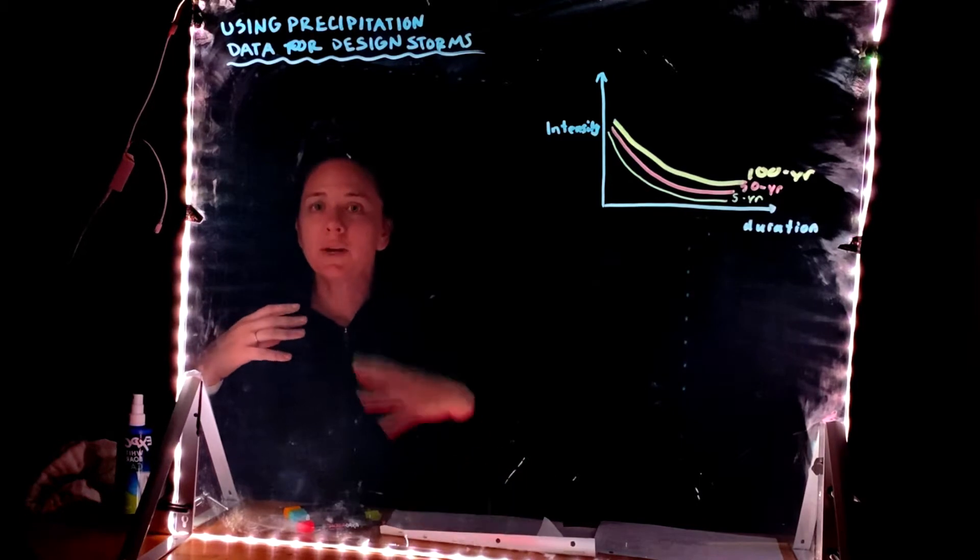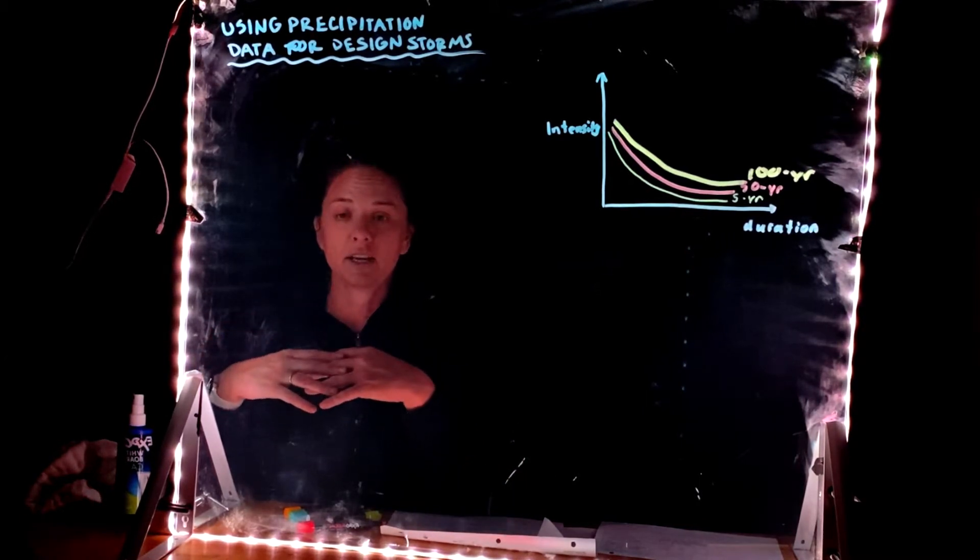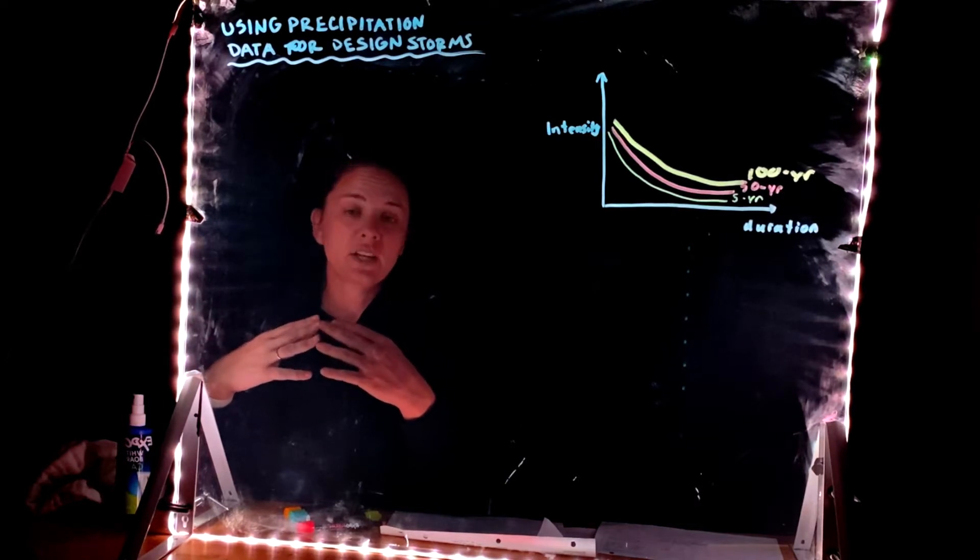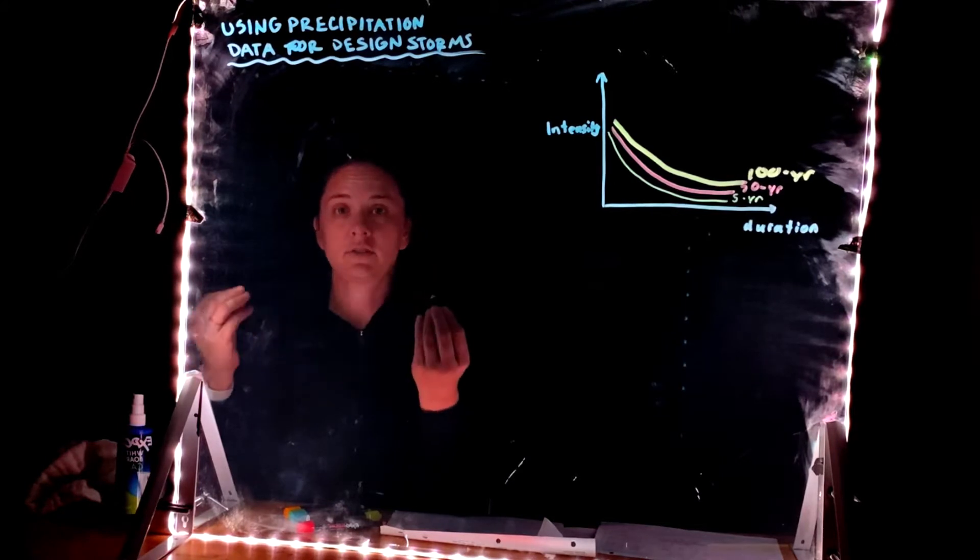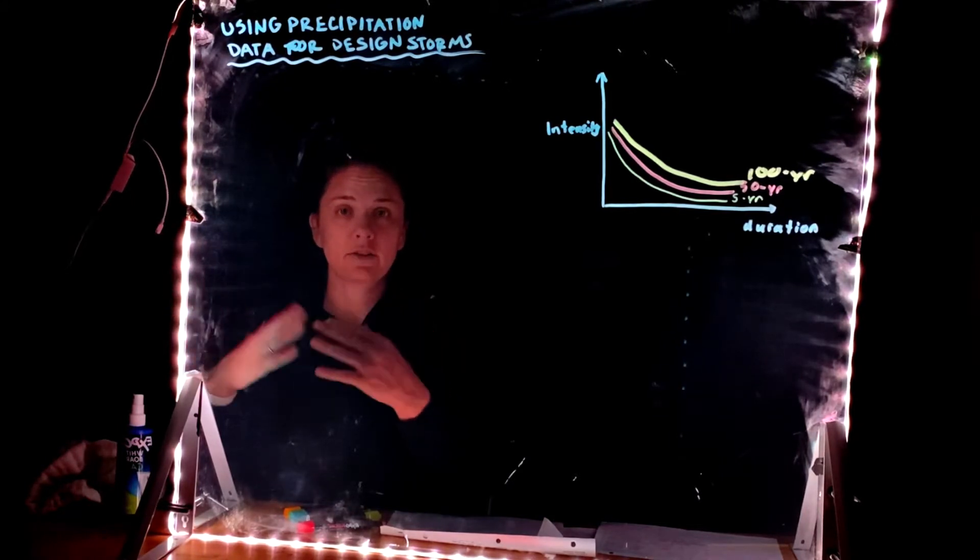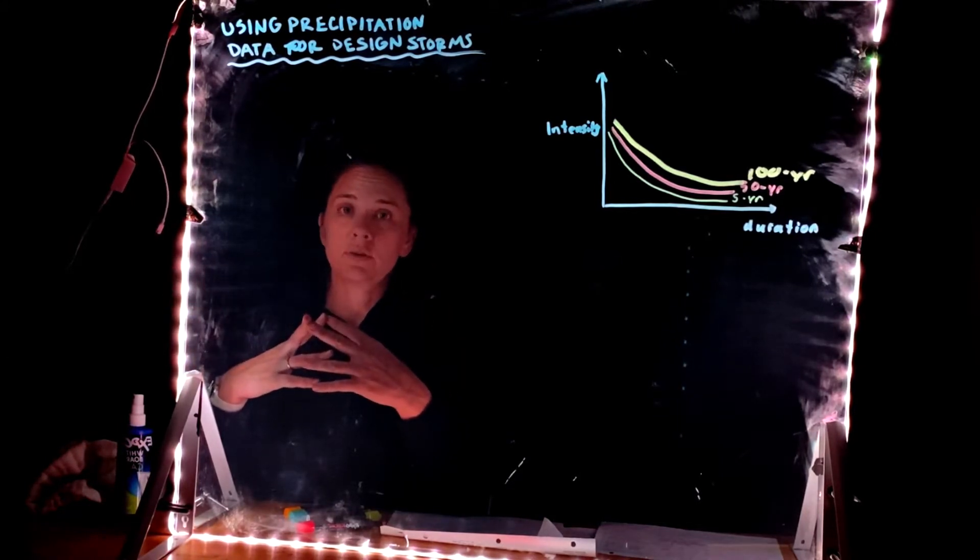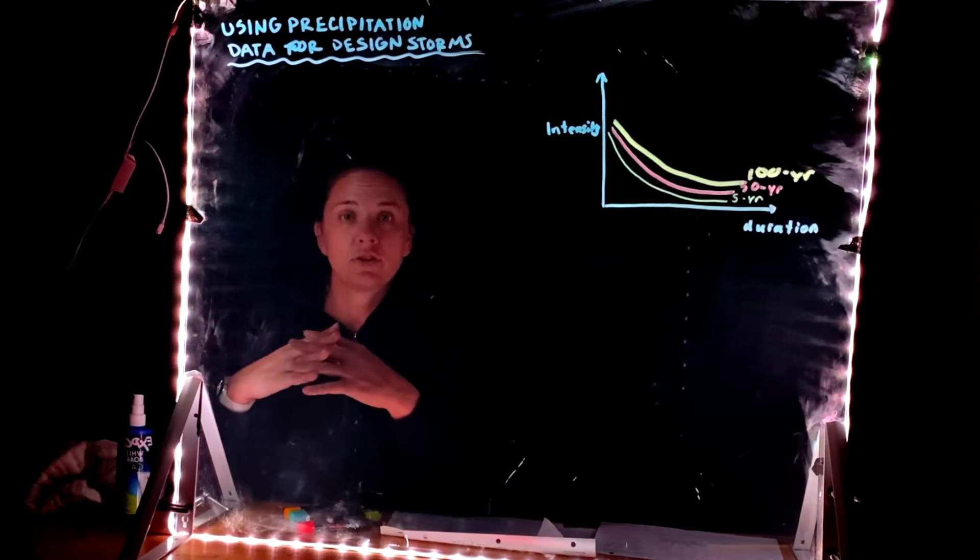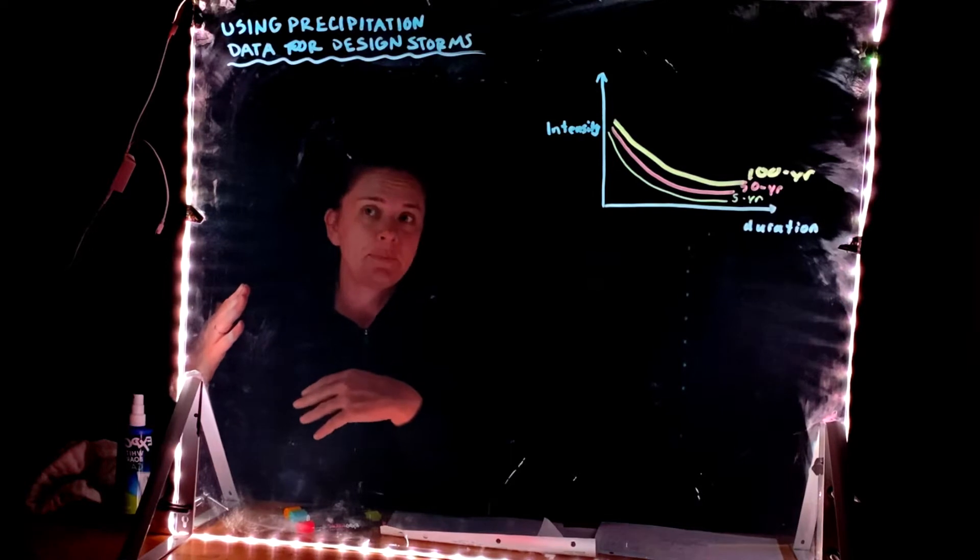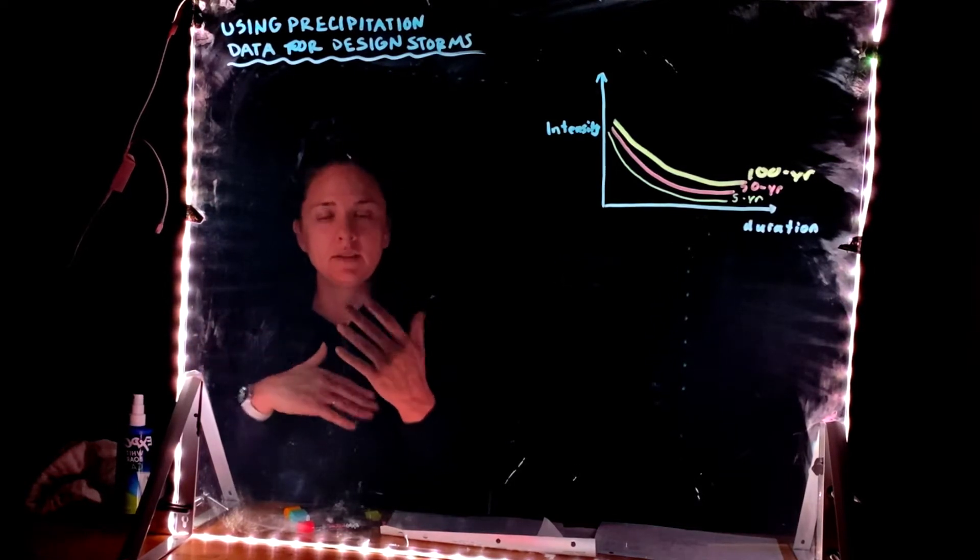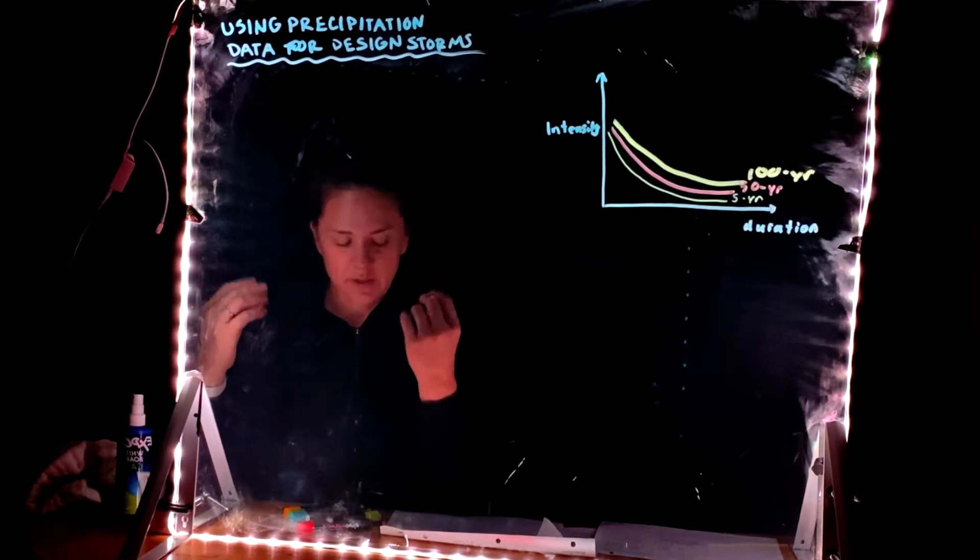So we want to be able to use our precipitation data, observed data, to predict design storms. And then as water resource engineers we use these design storms to help guide our design. So certain designs require you to use a two-year, 24-hour storm. So we're going to kind of break down what that means and how to derive where that came from.